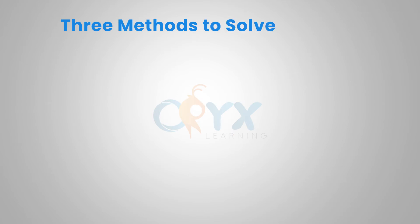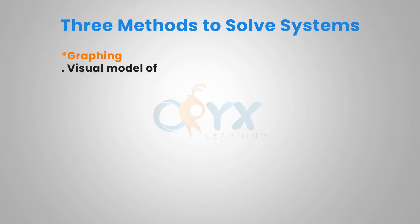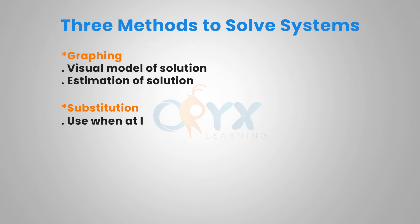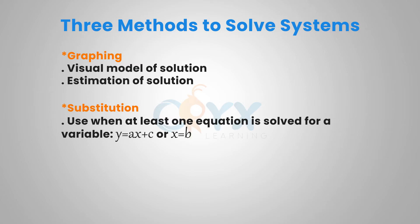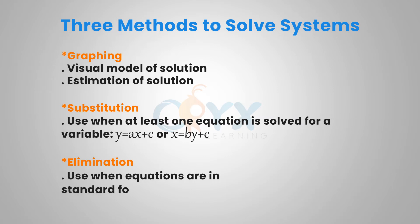There are three methods to solve systems of equations. The first is graphing, which is a visual model of the solution, though it is sometimes hard to get an exact solution and often results in an estimation. The substitution method is used when at least one equation is solved for a variable — for example, y = ax + c or x = by + c. Third, we have the elimination method, used when equations are in standard form: Ax + By = C.